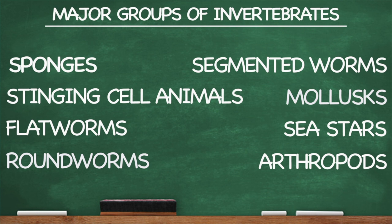That was it, my friend — Cycle 1, Week 5 Science. Those are a bunch of invertebrates. An invertebrate is — you know what, why don't you tell me what it is in the comment section? I think you know. I'm out, bye!